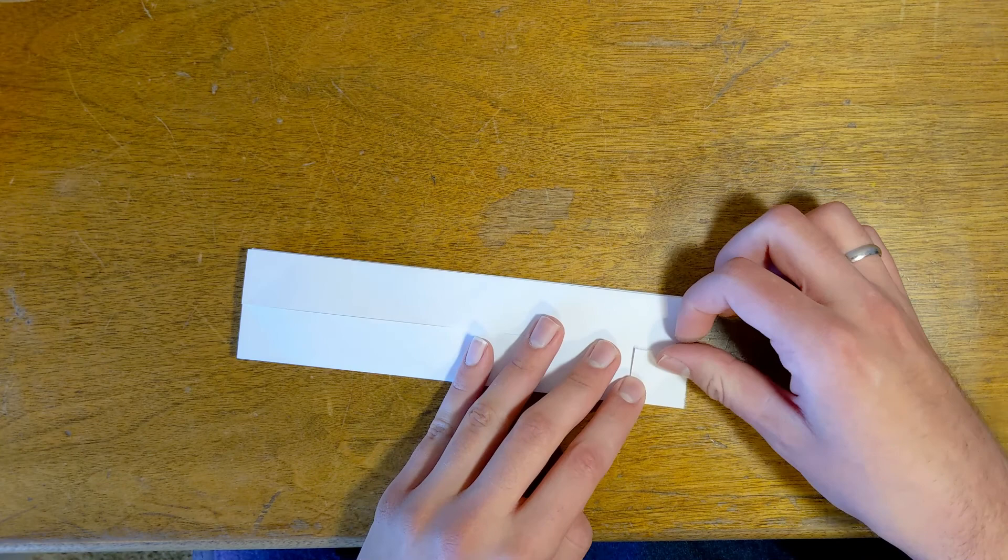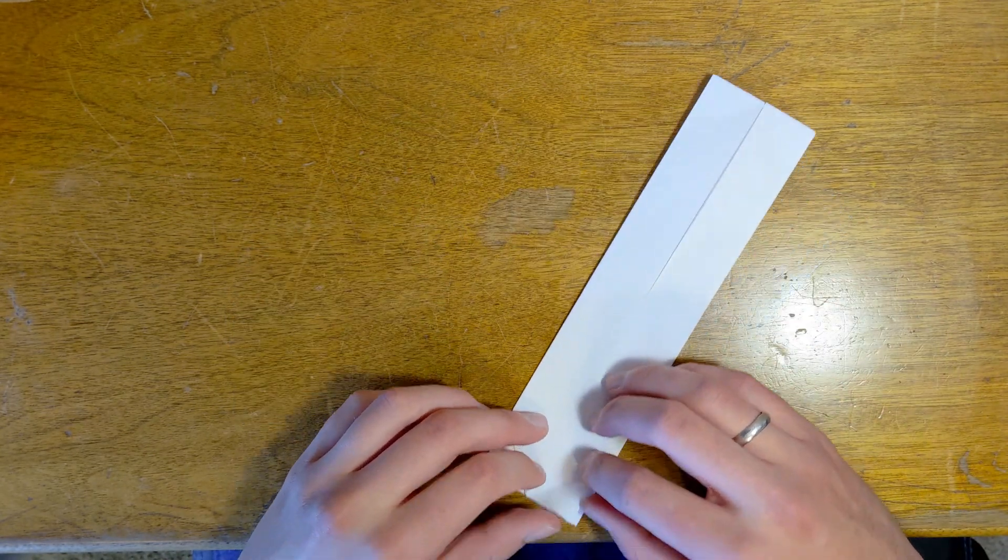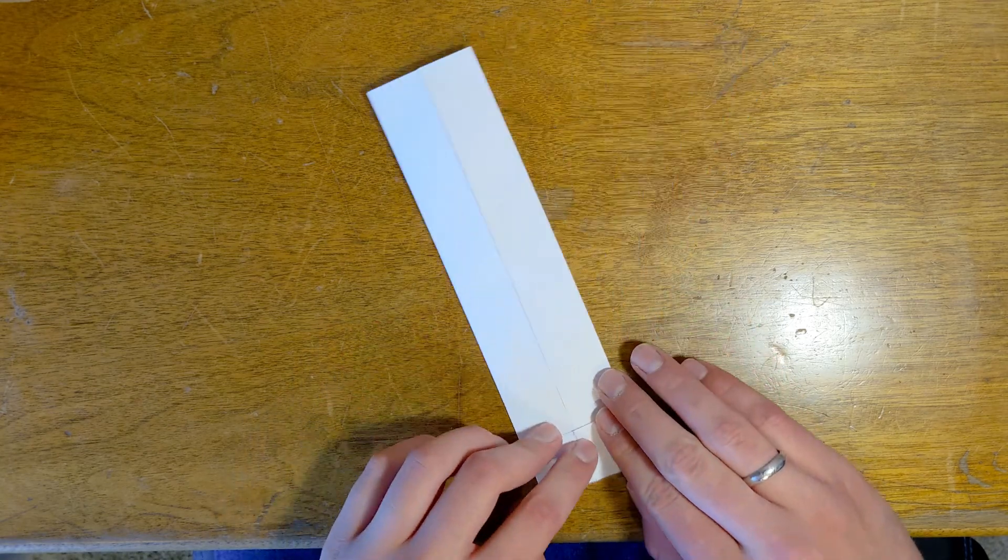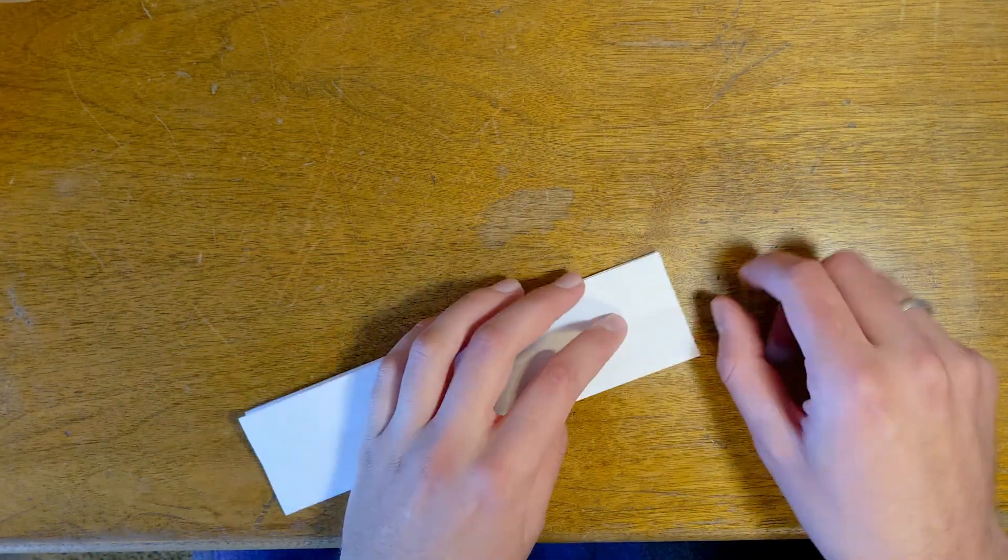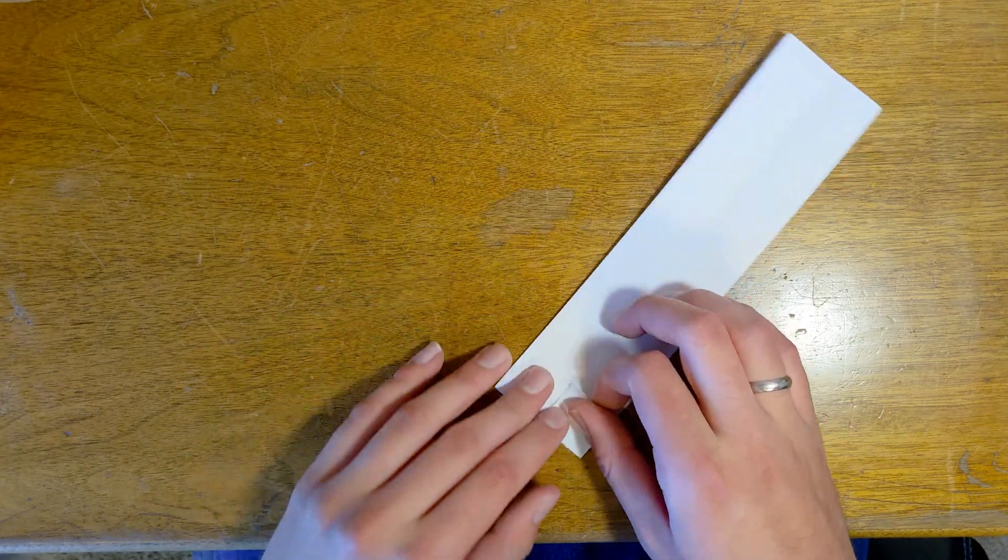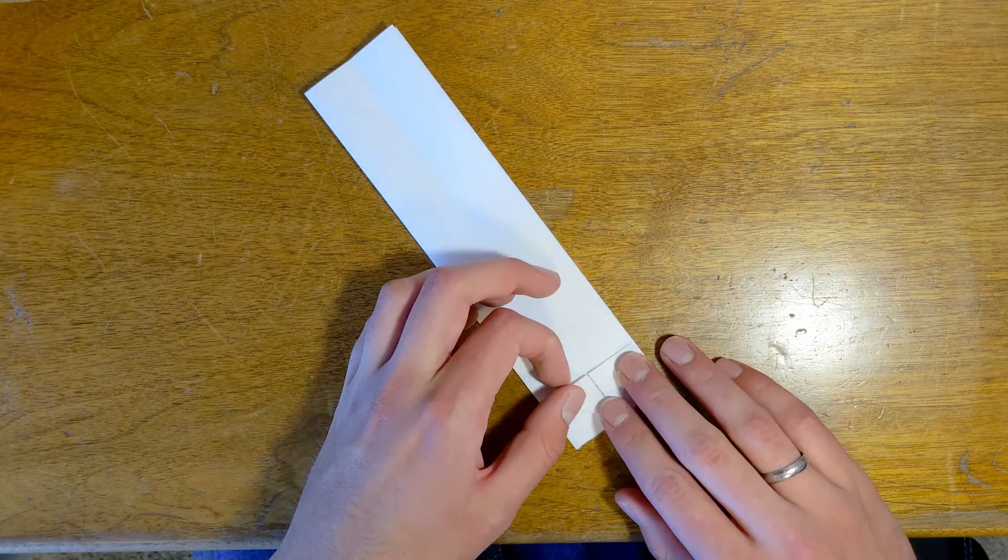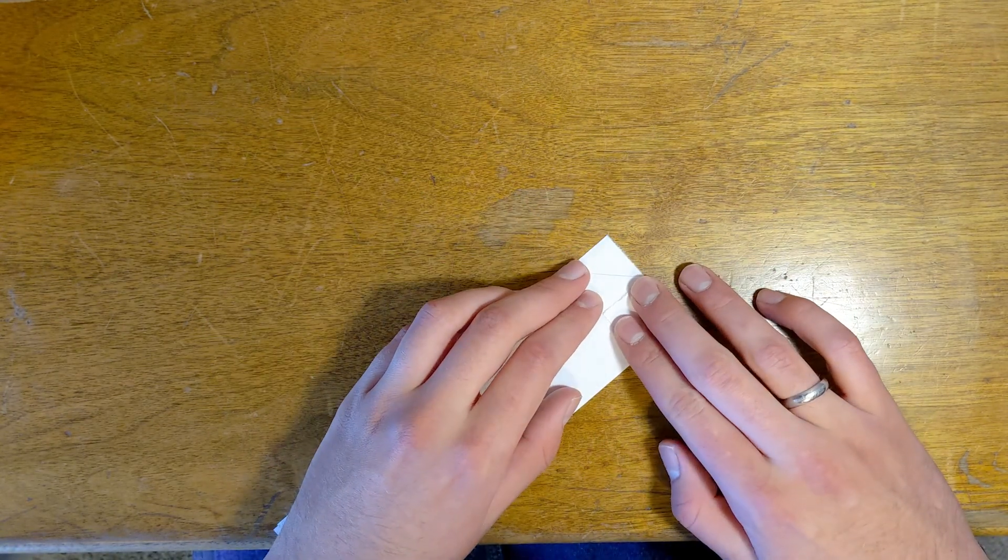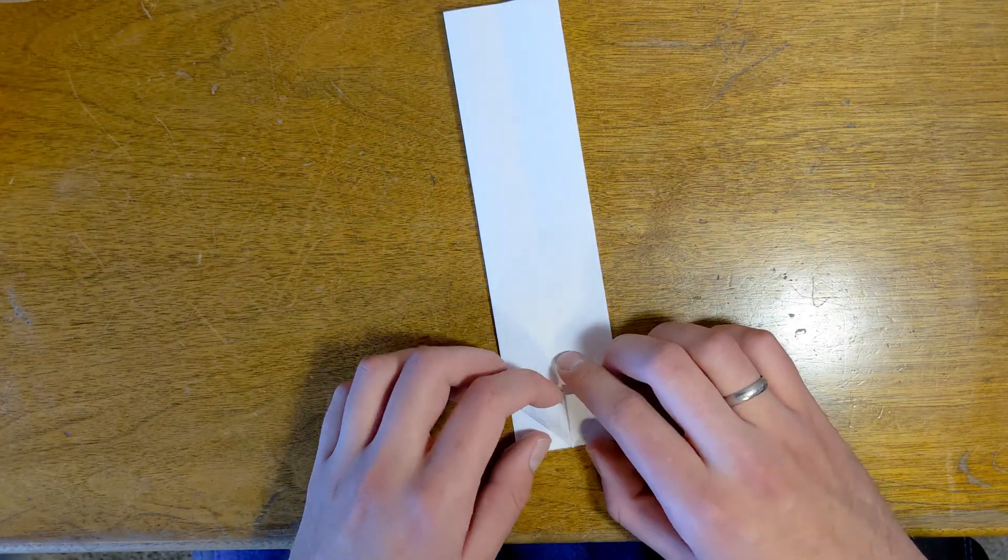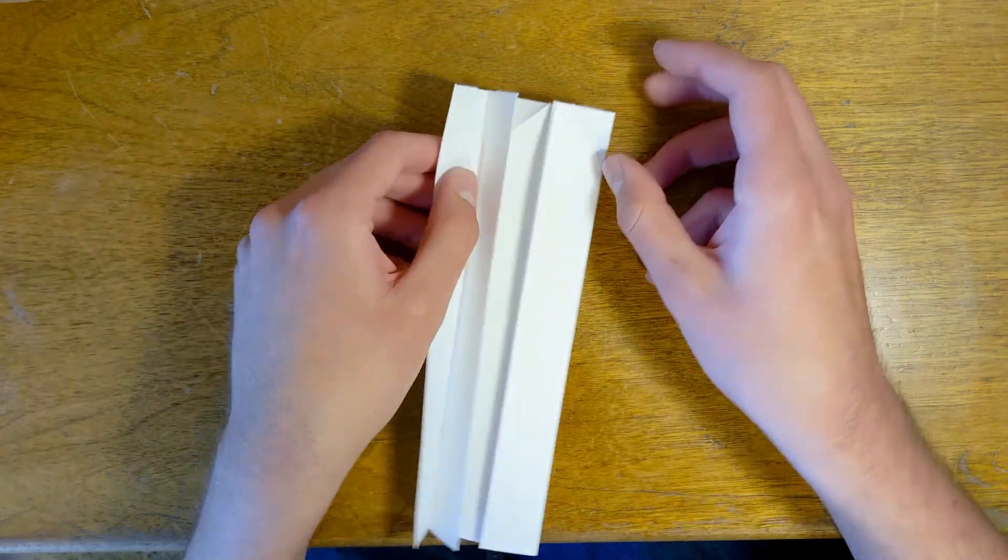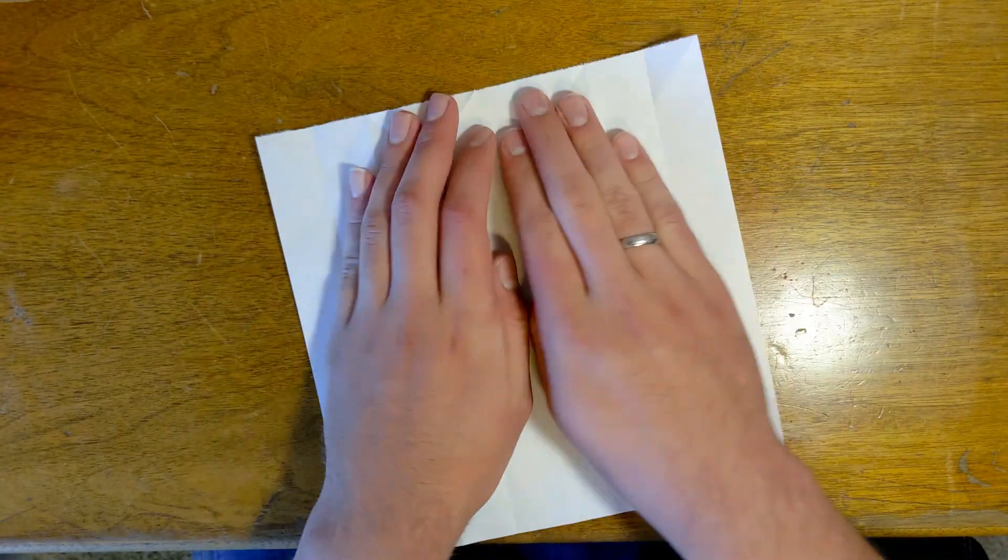Valley fold these triangle flaps up like this. So this will help create the flaps for Sonic's spiny hair. We'll get it like that and then unfold the design like so.